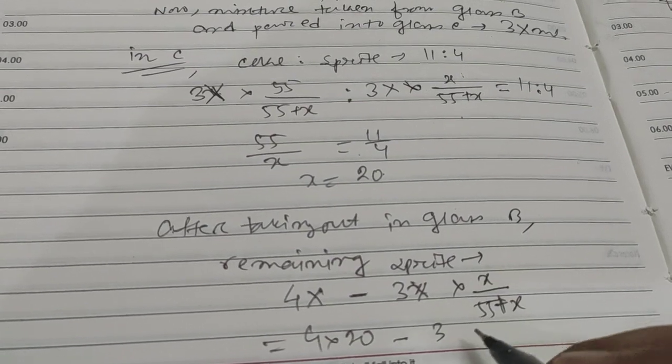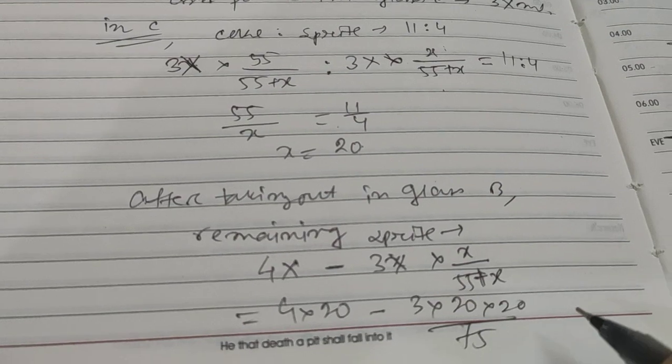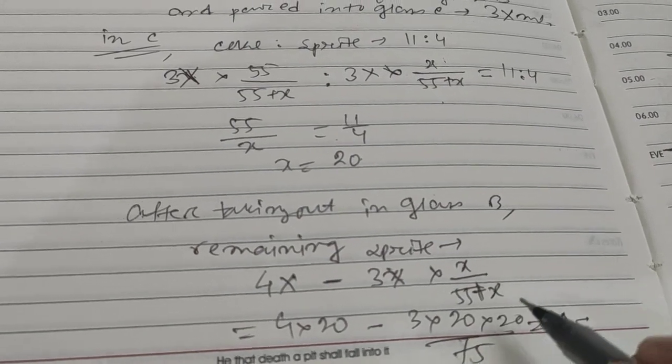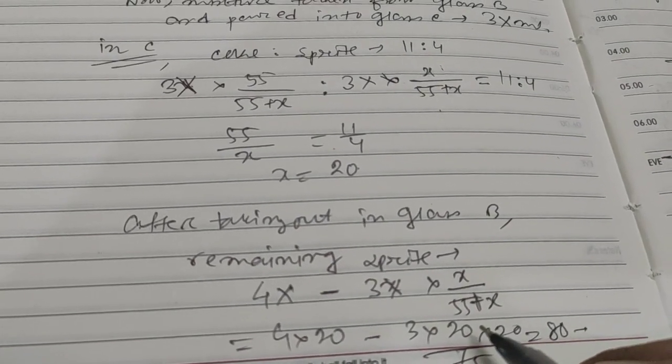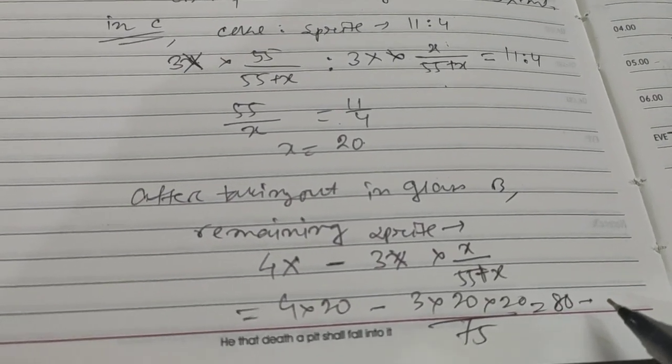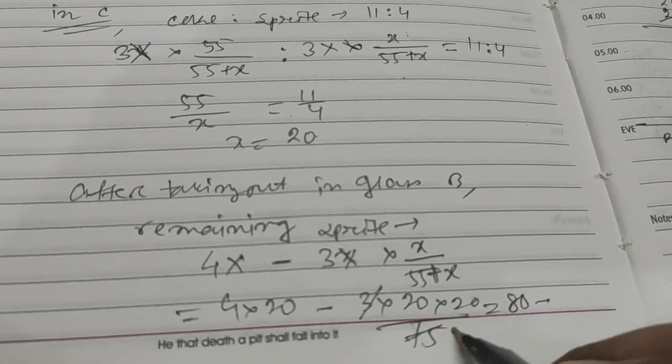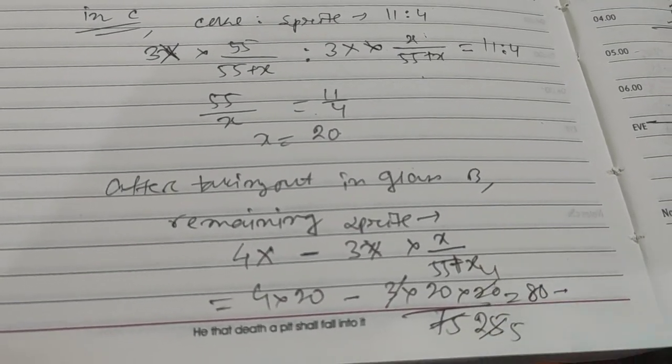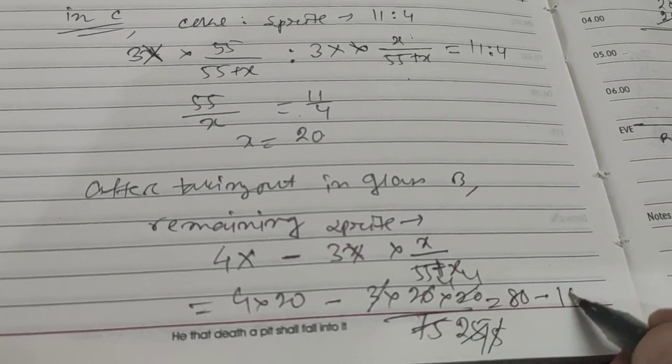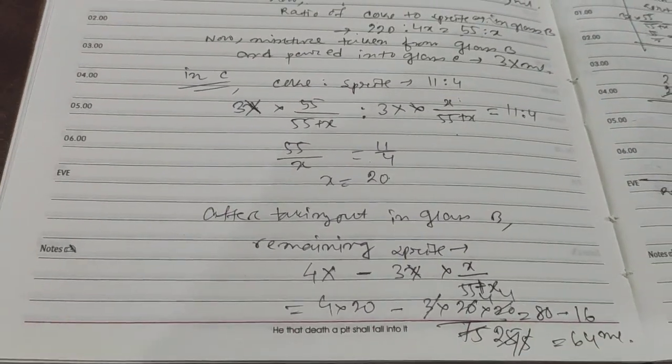That means 75. So 80 minus this calculation gives us 64 ml. So 64 ml sprite will remain.